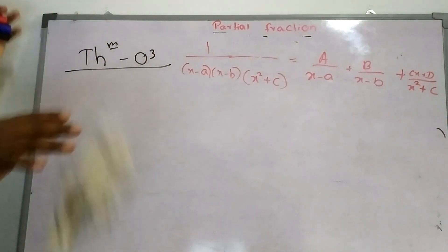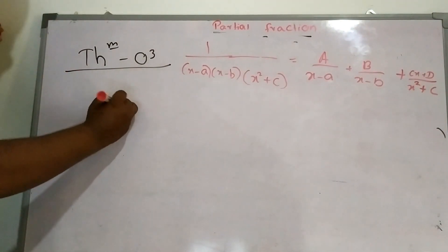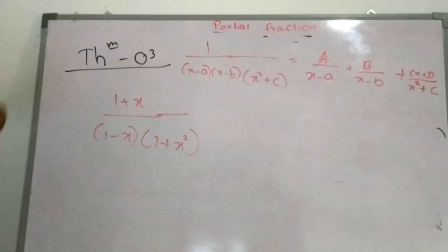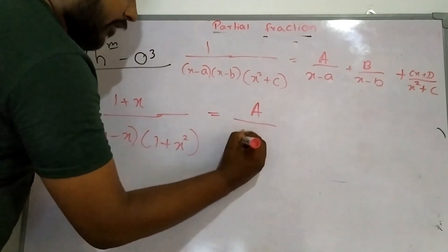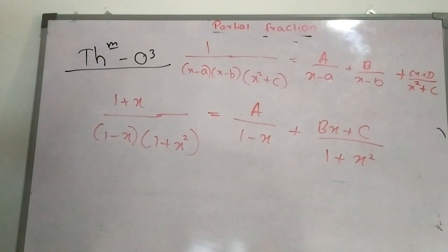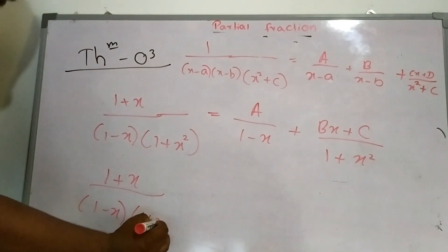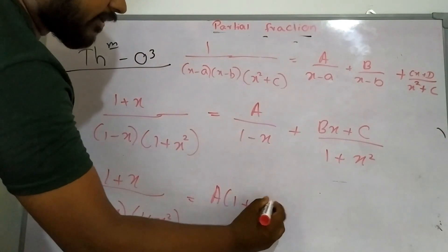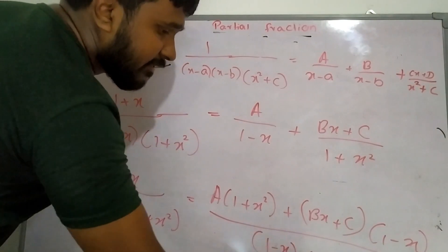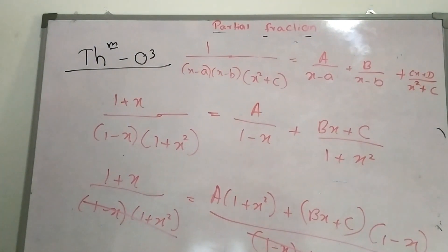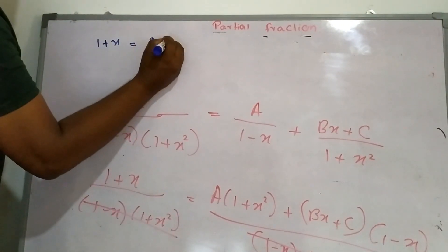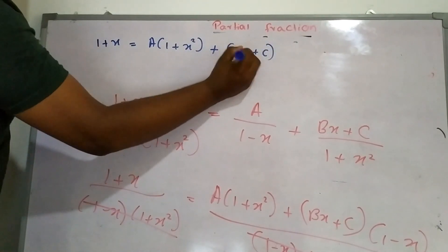Let me discuss another example: (1 plus x) over (1 minus x)(1 plus x squared). The partial fractions will be A over (1 minus x) plus (Bx plus c) over (1 plus x squared). Taking the LCM: A multiplied by (1 plus x squared) plus (Bx plus c) multiplied by (1 minus x), all over (1 minus x)(1 plus x squared). After the LCM is applied, the denominators cancel, giving: 1 plus x equals A(1 plus x squared) plus (Bx plus c)(1 minus x).